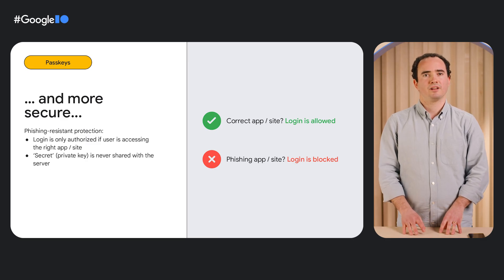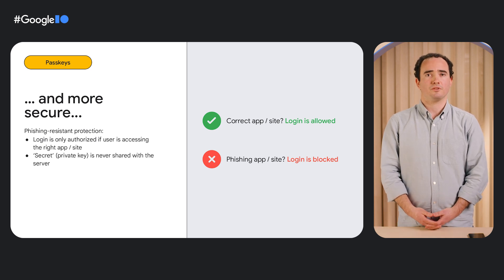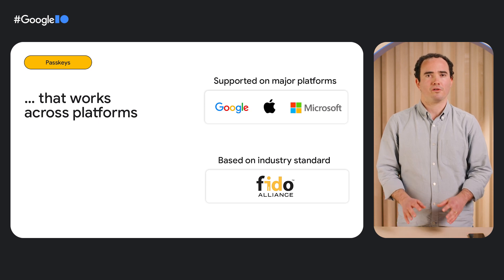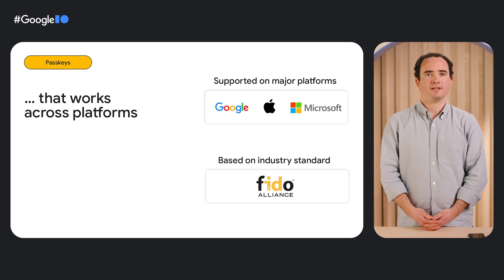Passkeys leverage familiar patterns, like a biometric check or a screen unlock, and provide multi-factor authentication in a single tap, allowing for quicker signing experiences for users and increased signing rates for developers. Passkeys also make signing more secure and offer phishing-resistant protection by design, as the signing is only authorized if the user requests it on an authorized app or site. Also, the private key is never sent to the app server, making passkeys less prone to breaches. And the best part? Passkeys give users access to their apps wherever they want. This is possible because passkeys are based on the FIDO standard and are supported by major platforms and browsers.